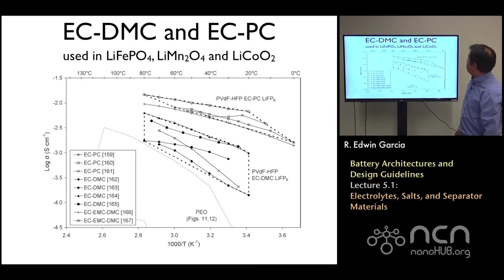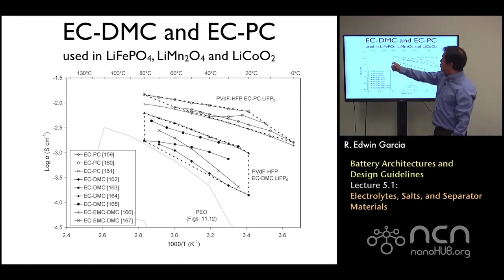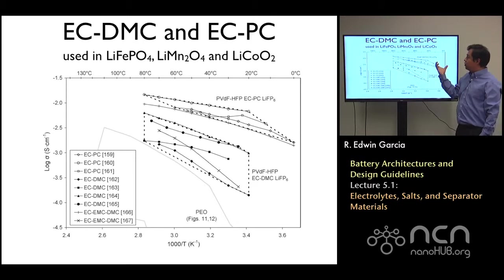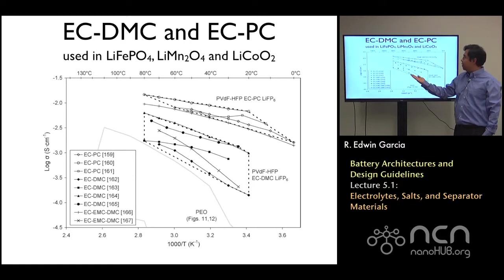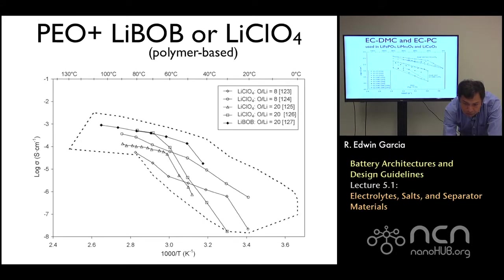EC:DMC and EC:PC give different types of behavior. Overall, you can see the performance is really ranging from 80 degrees down to basically 5 degrees Celsius, really suggesting that you really should not pull out your laptop at very low temperatures — although I guess you can do it indoors with a nice cup of hot chocolate.